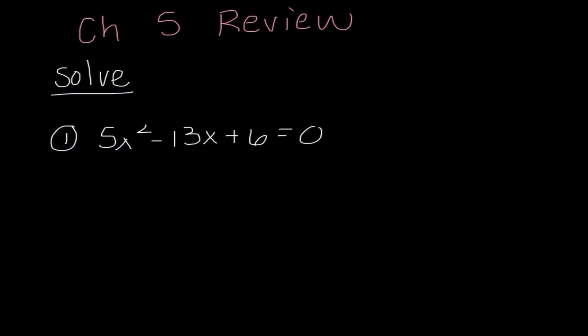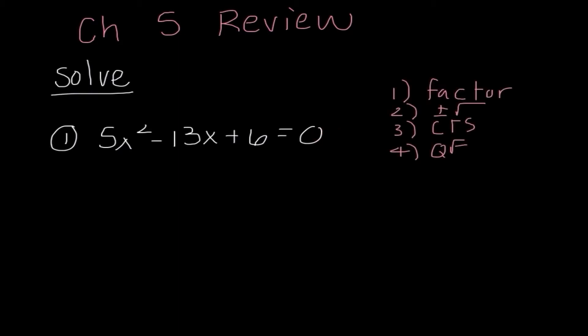Ms. Miklos here with our Chapter 5 review, and the first few problems we're going to go through are similar to what you're going to see at the very beginning of the test. It's telling us to solve, and we have a quadratic function. There are four different methods we could use to solve. Factoring and square roots are probably the two easiest methods, but they don't always work. Completing the square and quadratic formula always work.